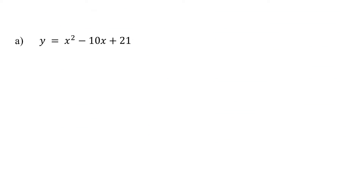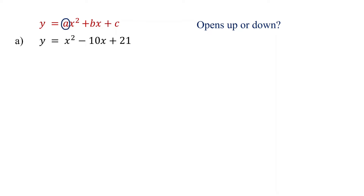The first step is to determine whether the parabola opens upward or downward. For a quadratic function in standard form, if a is greater than 0, the parabola opens upward. If a is less than 0, the parabola opens downward. In our function, a is 1, which is greater than 0, so the parabola opens upward.